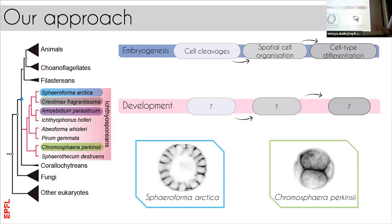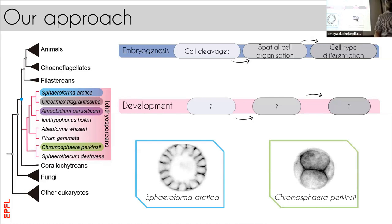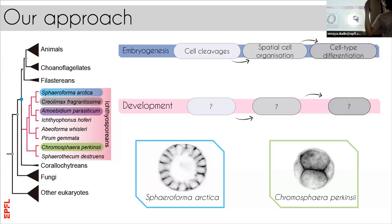Today, we're talking about two stories, involving two specific ichthyosporean species. If you don't remember the names, just remember species A — which we'll call Sphaeroforma arctica — and species B — Chromosphaera perkinsii. Sphaeroforma arctica, as the name suggests, grows at 12 degrees Celsius.